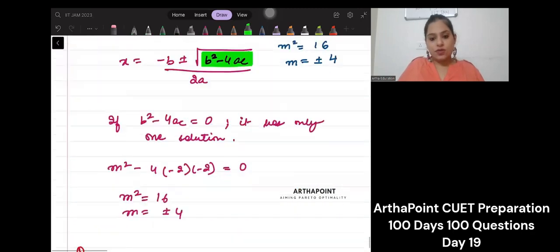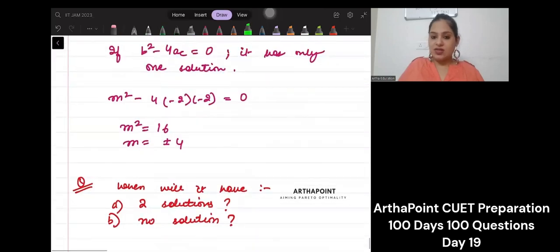Okay, now I am leaving a question for you and I want you to go ahead and answer this question. When would it be the case that you will have two unique solutions of x?